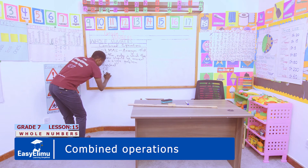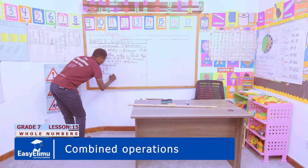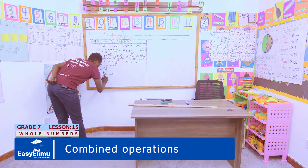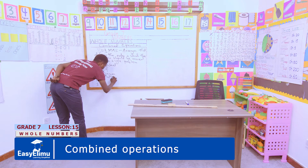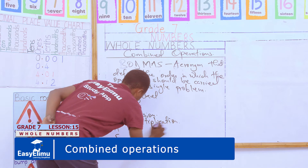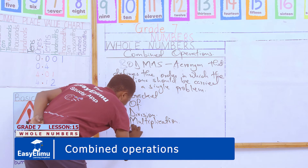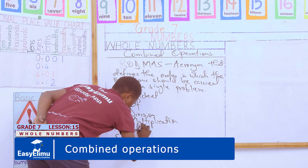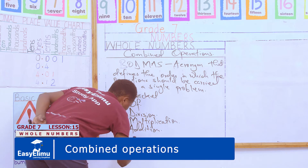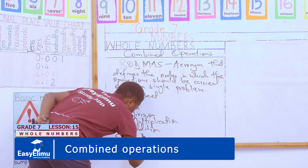Then here we have D, which stands for Division. After performing Off, you carry out Division. Then we have M, the normal Multiplication. Then we have A and S, which stand for Addition and Subtraction.